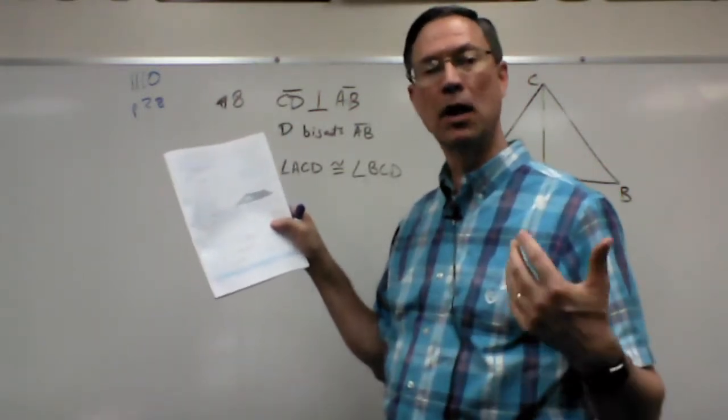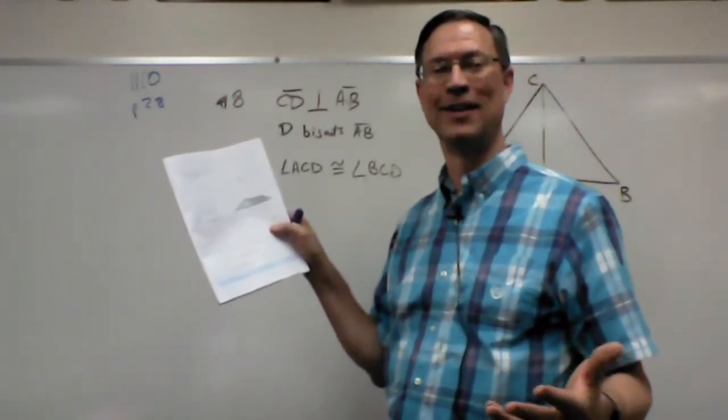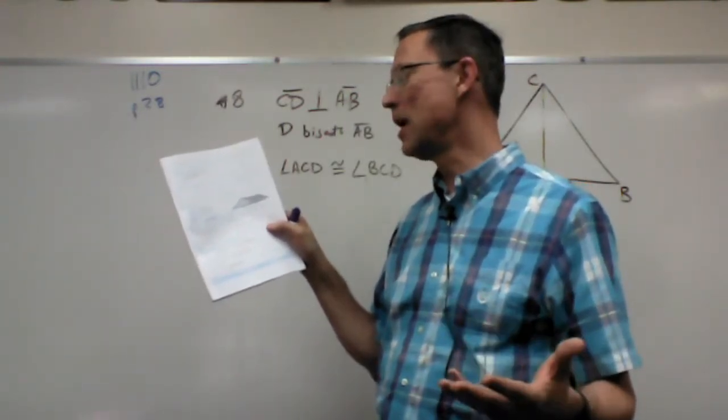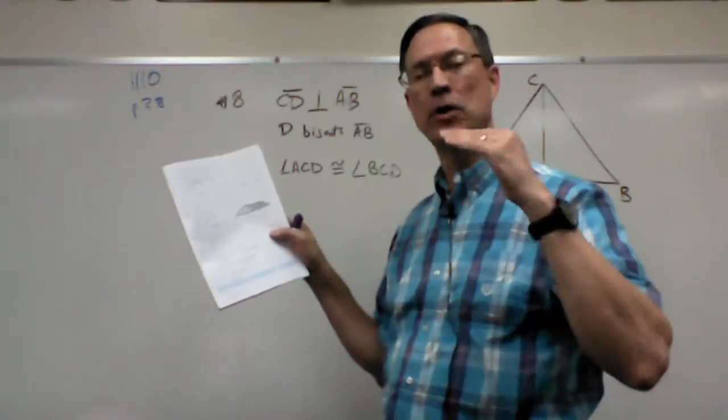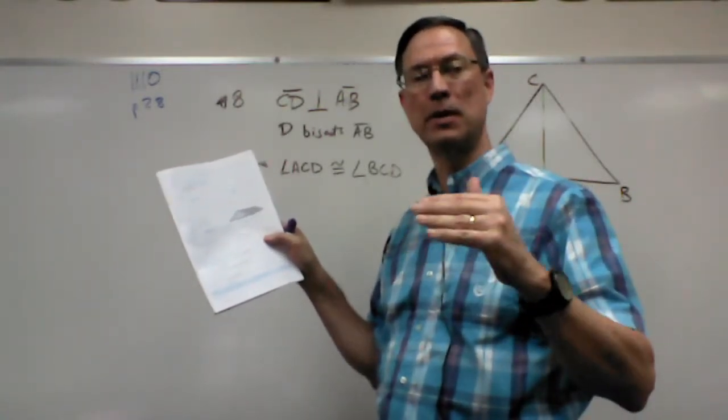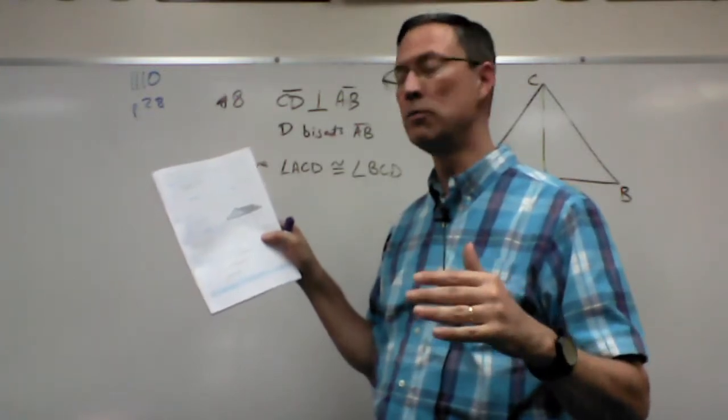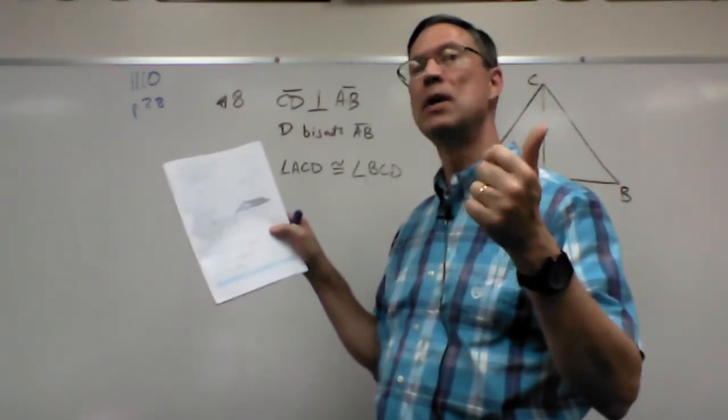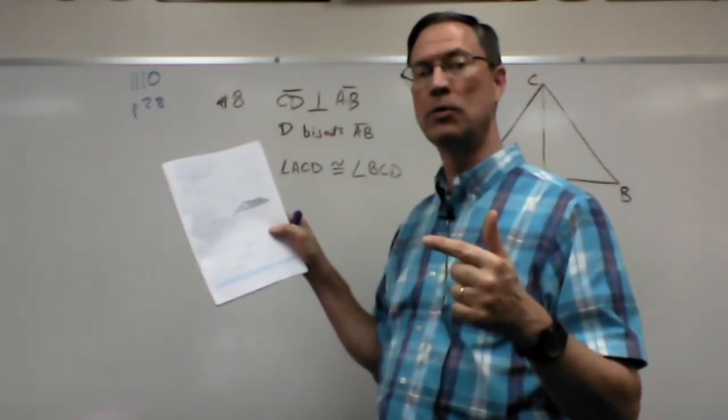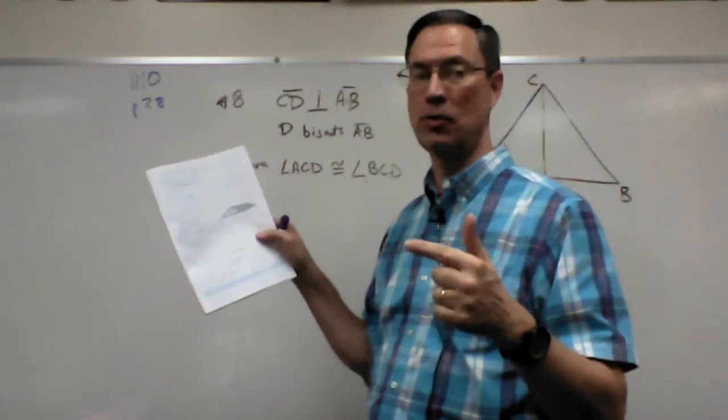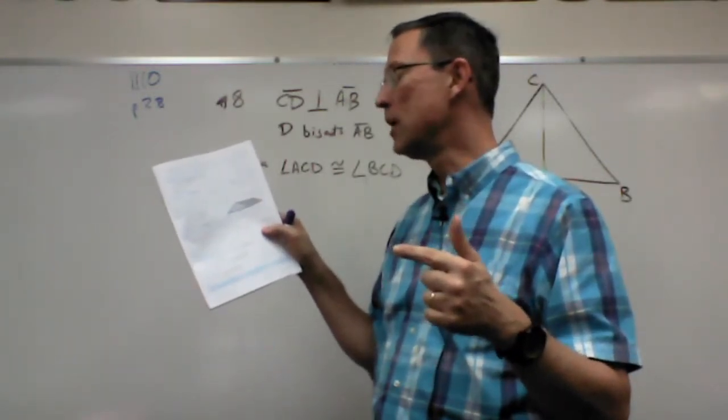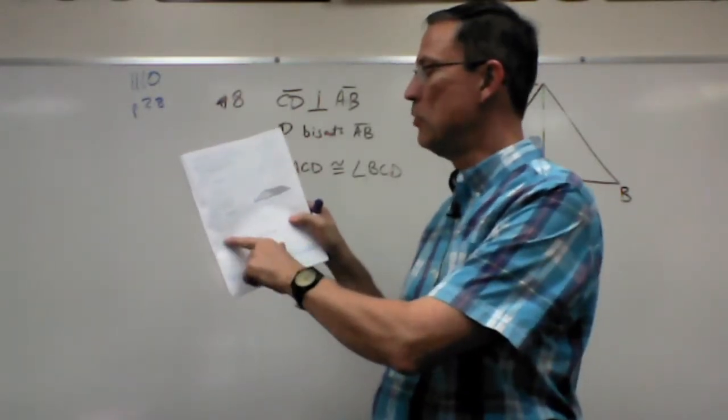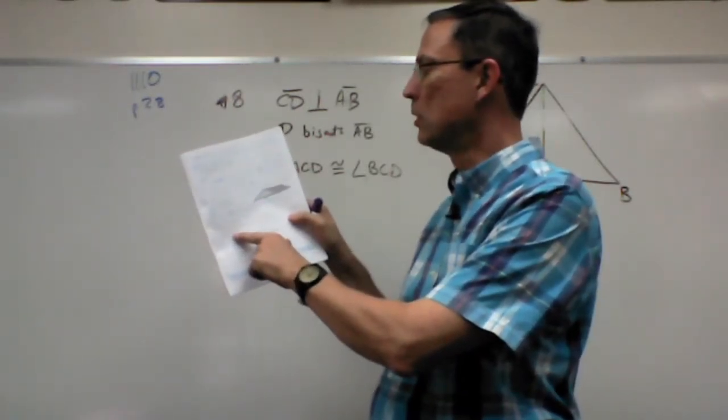Now that seems way too obvious, right? It seems like, why do I have to state that? I mean, you can see that. But again, this is what we're doing in geometry, is trying to list every statement and prove everything and not make assumptions. And so the fact that we have a right angle, yes, we can rightly conclude this is a right triangle. And we have to have a right triangle before we can apply the leg-leg theorem and prove that the triangles are therefore congruent.